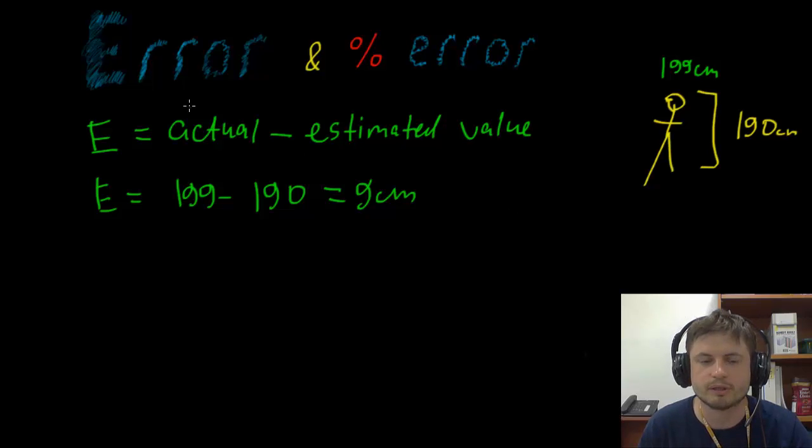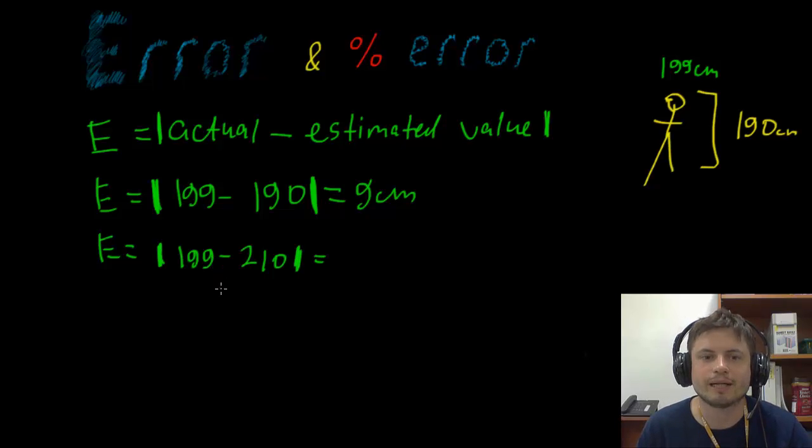Now, your book makes this a little bit more specific by including the absolute value brackets. Which is basically the vertical looking line that means that your sign here is not important. So if you estimate this person to be 210 centimeters, which will be 199 minus 210, without the absolute brackets, you actually get a negative value. And this doesn't really make sense because it's an error anyway. So you're actually looking for positive value, which is why we include these absolute value brackets. So in this case, it's actually 11 centimeters.